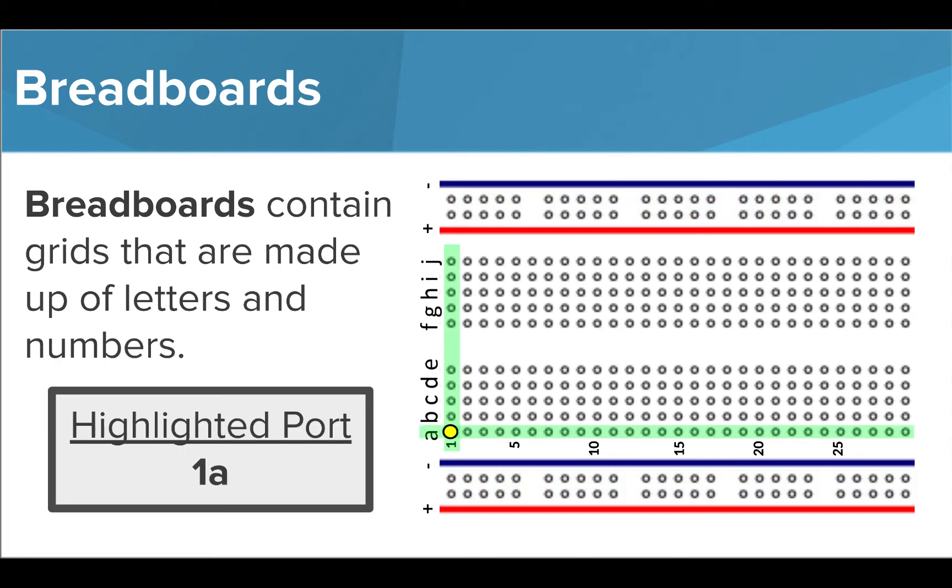To note the exact location of a port in the middle of our board, we use the number-letter combination. For example, this port is located at 1a, this port is located at 1f, and this port is located at 4f.